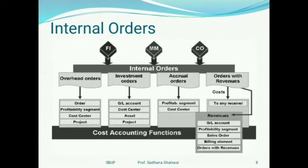Now let us see what an internal order is and its difference from cost centers. Internal orders are the temporary storage of costs and are of four different types. If you are storing overhead costs temporarily, the type is called Overhead Internal Orders. When you are constructing a building or buying an asset, that cost is contained in an Investment Order. If you have certain accruals to be paid — for example, a bonus or interest to customers or business partners — you will use Accrual Orders to store all accruals temporarily.